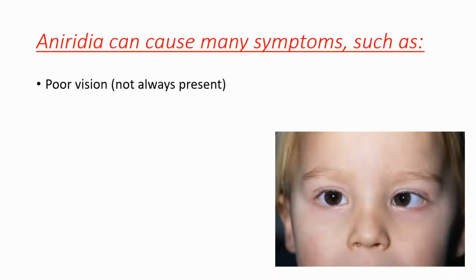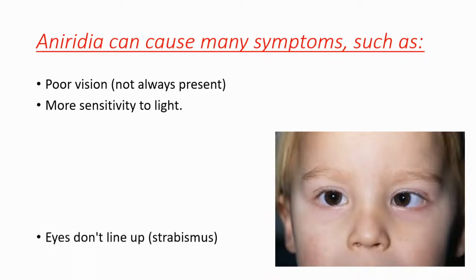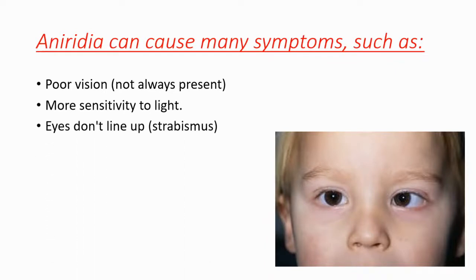For example, poor vision — though this is not always present — more sensitivity to light, and eyes that don't line up, which is called strabismus.